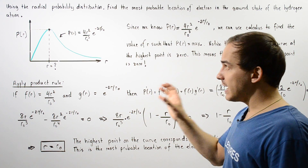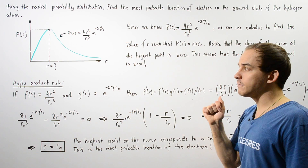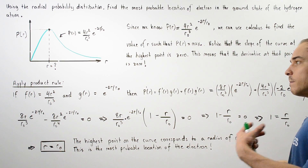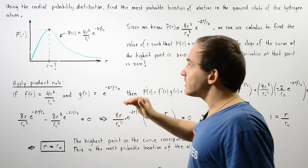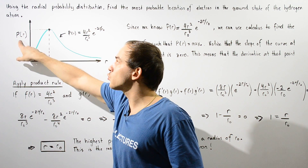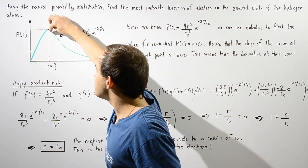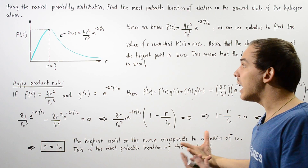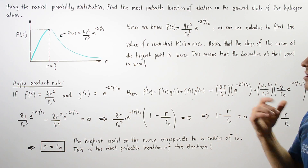If we take this equation and plot it on the x-y axis, we get a green curve where the x-axis is the distance r from the center of the nucleus and the y-axis represents the radial probability P. Examining this curve, the highest point represents the maximum radial probability, which is the most probable location. Drawing a vertical line downward from this peak, that unknown r value represents the most probable location of our electron.